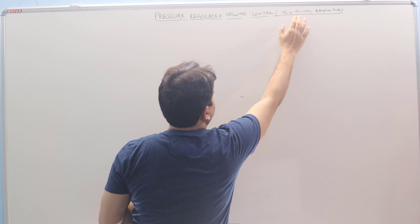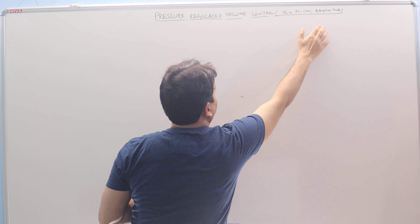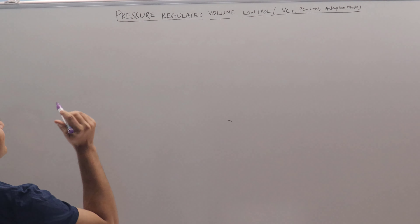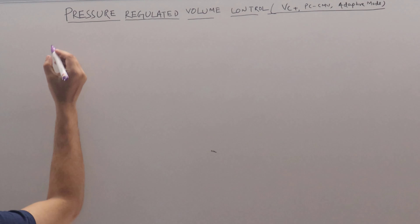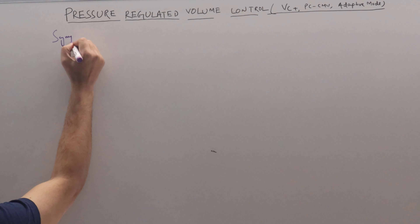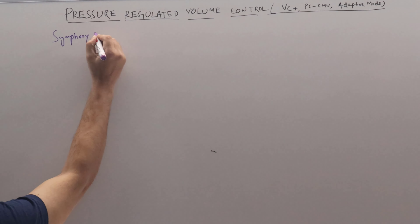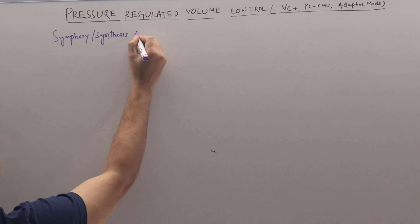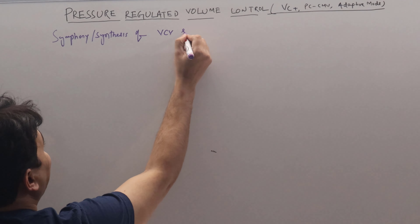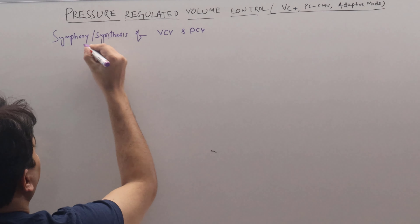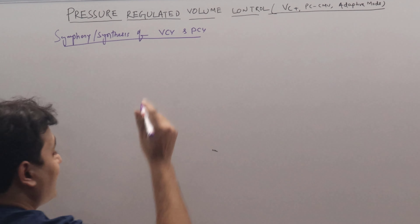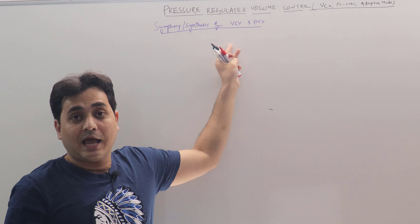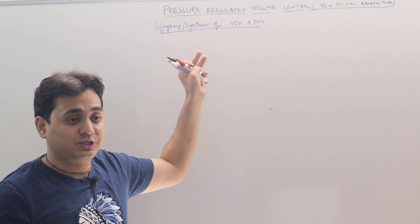PRVC is otherwise also called VC+, PCCMB, or adaptive modes depending upon the manufacturer, but the basic concept remains the same. The basic concept is that I see it as a symphony or synthesis of volume control ventilation and pressure control ventilation, whereby taking the best of these two modes of ventilation while avoiding the worst.